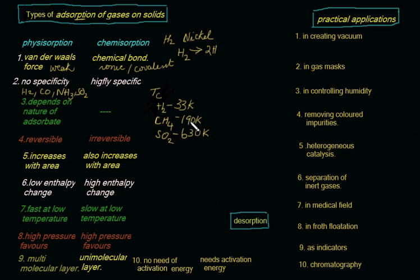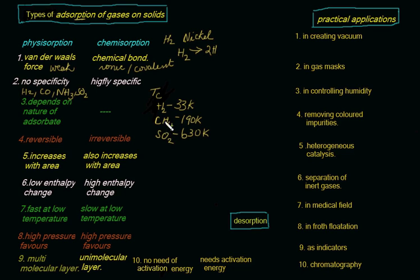Hydrogen and methane have critical temperatures below room temperature (295 K in absolute scale), so these two gases have to be cooled further to a great extent to be liquefied by applying pressure. Not so in the case of sulphur dioxide, whose critical temperature is much higher than room temperature, so it can be easily liquefied. Among these three, sulphur dioxide is more easily liquefiable, so it adsorbs faster than methane or hydrogen.